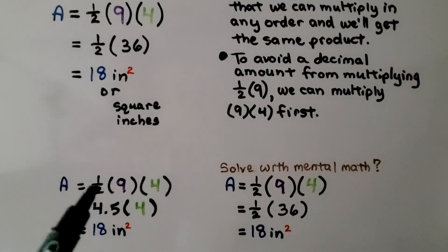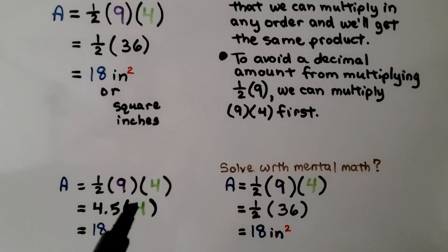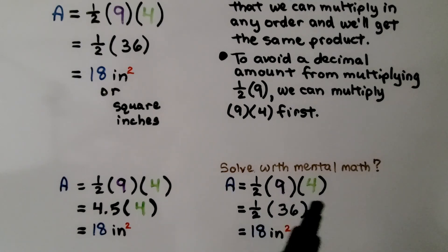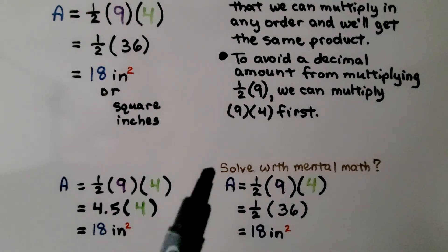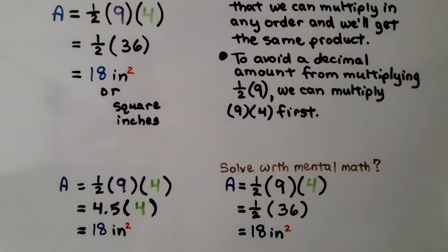If we had multiplied half times nine first, we would have gotten four and five tenths. Then we would have needed to multiply that to the four. But by multiplying the nine times four first and getting 36, half of 36 is 18. We stayed with a whole number. We might have even been able to solve that with mental math.